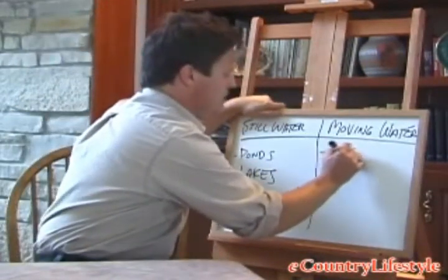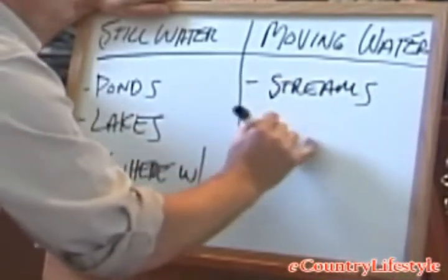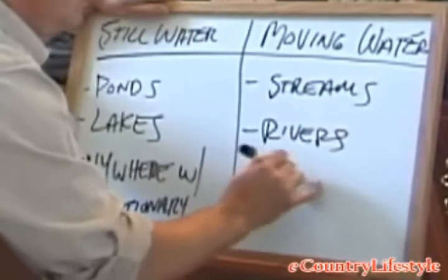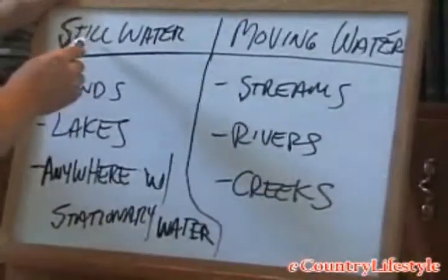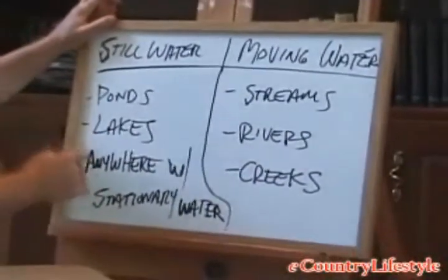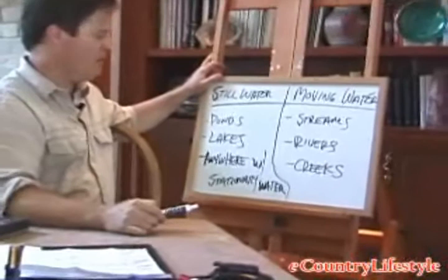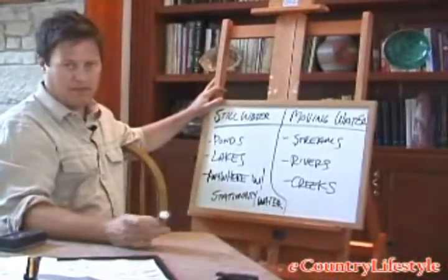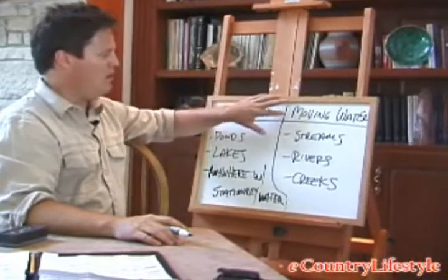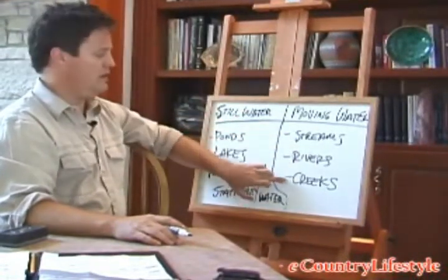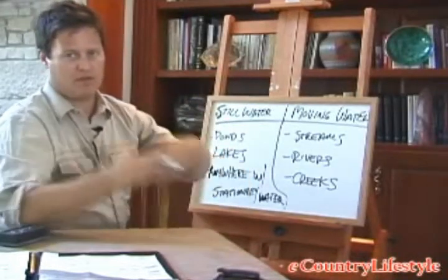Obviously you're going to have streams, rivers, and creeks for moving water. With moving waters, you have streams, rivers, and creeks — anywhere where you've got a flow, a velocity of water that's moving.